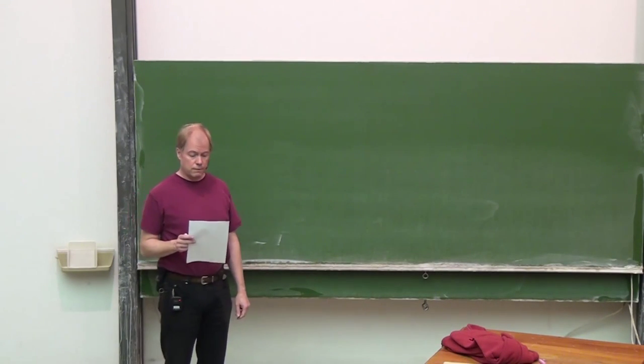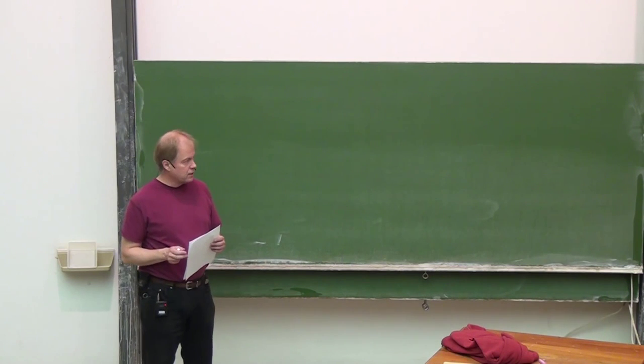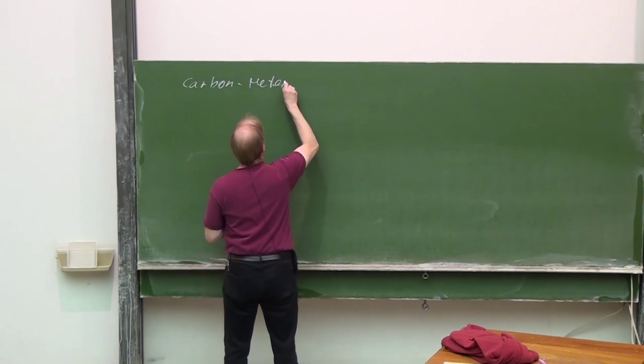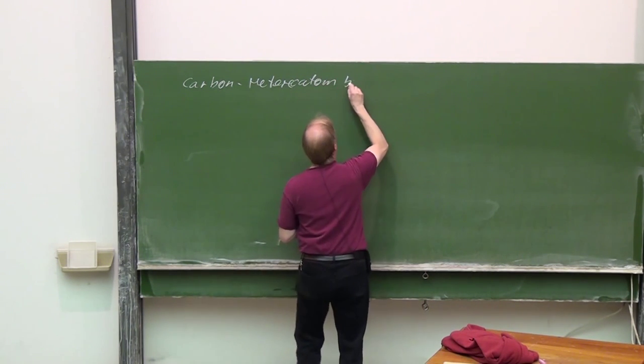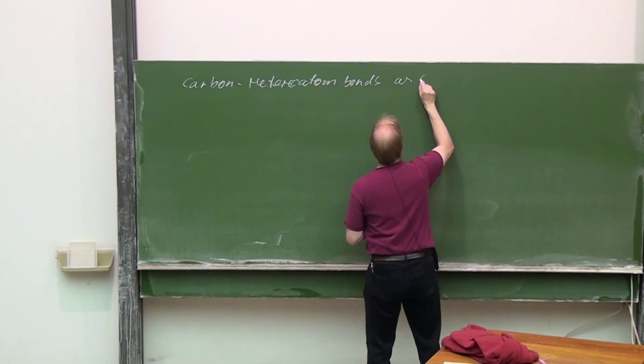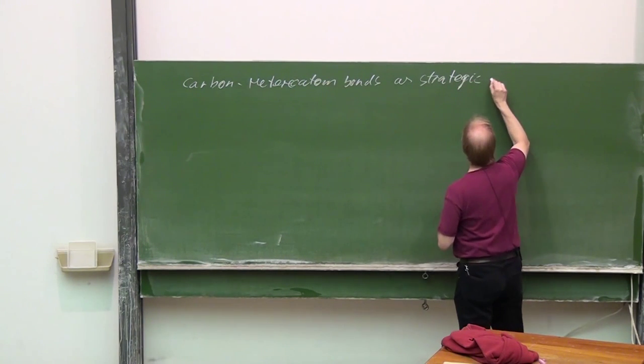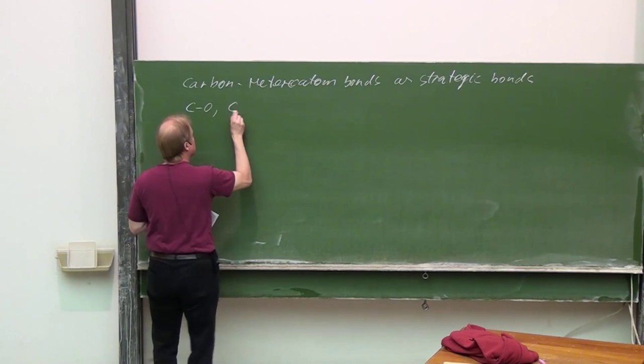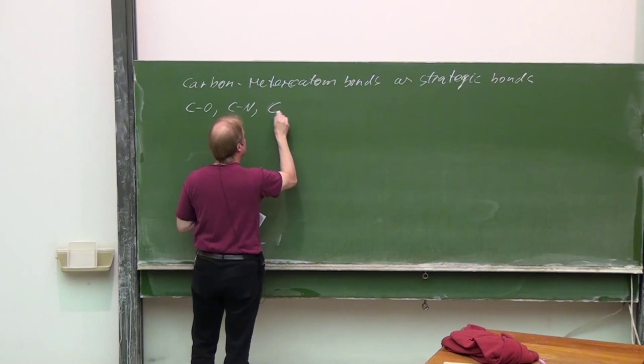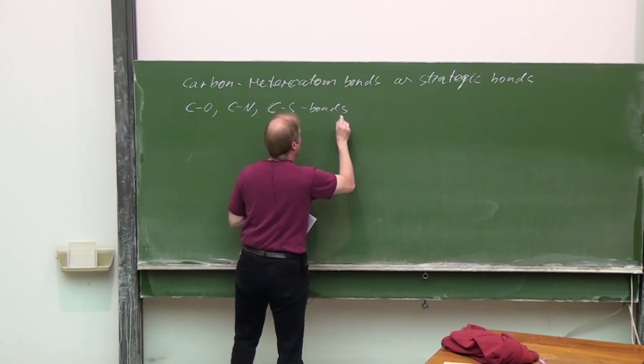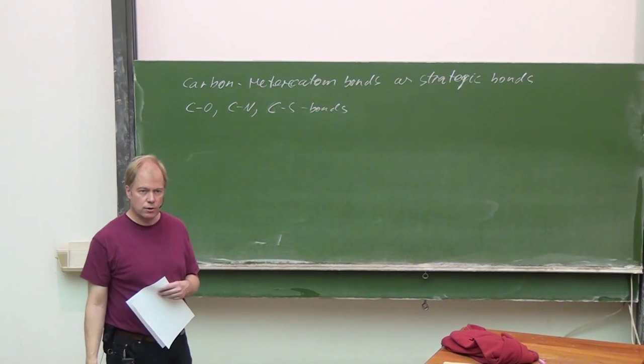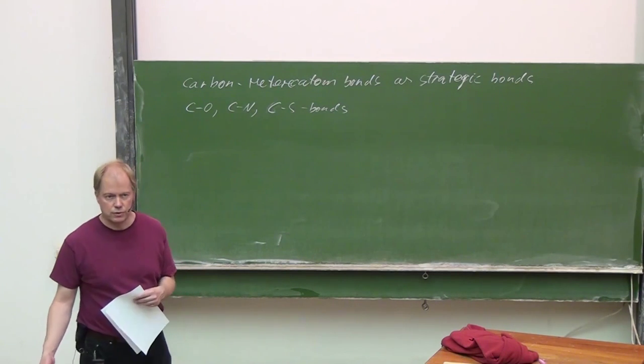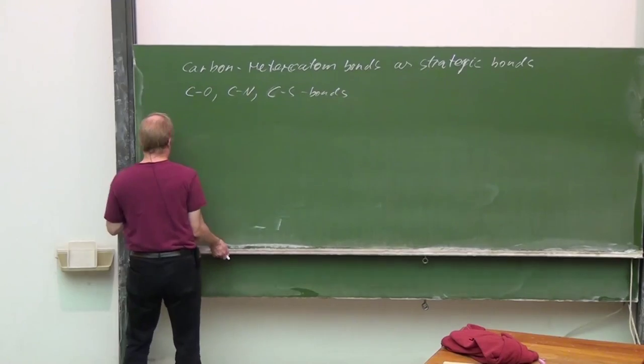Welcome to another part of the lecture on Designing Organic Synthesis. Subjects of today are carbon heteroatom bonds as strategic bonds. Especially CO, CN, and CS bonds are often regarded as strategic bonds since they are rather easy to make through nucleophilic substitution reactions in general. Let's start with one example.